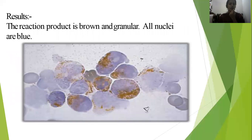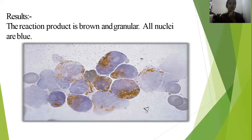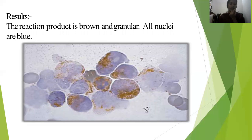The results of MPO staining show that MPO-positive cells display a brown-colored, granular reaction product. MPO-positive cells appear brown in color, and the nuclei of these cells appear blue due to the hematoxylin counterstain.